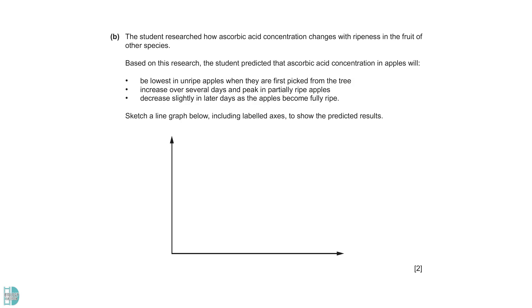Part B wants you to sketch a graph according to the student's prediction. The x-axis should be the independent variable, time. The y-axis is the dependent variable, ascorbic acid concentration. The graph would initially increase, reach a peak, and then decrease slightly at the end.